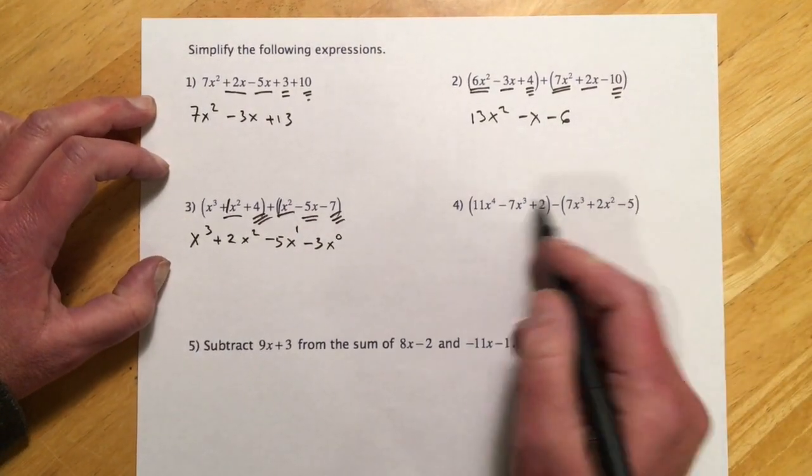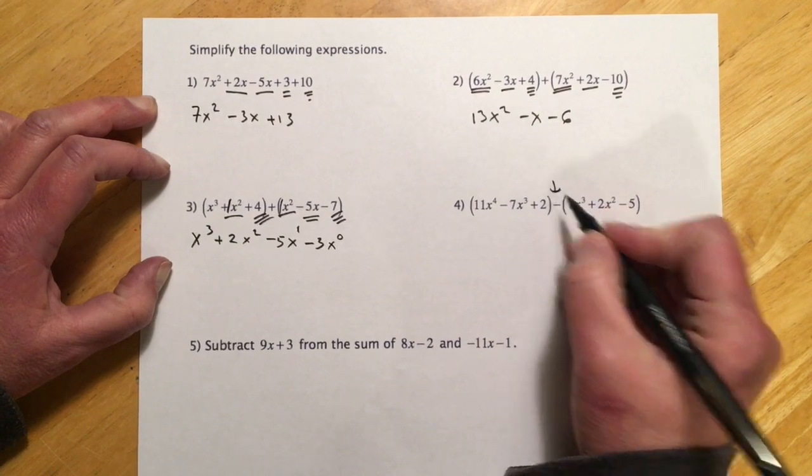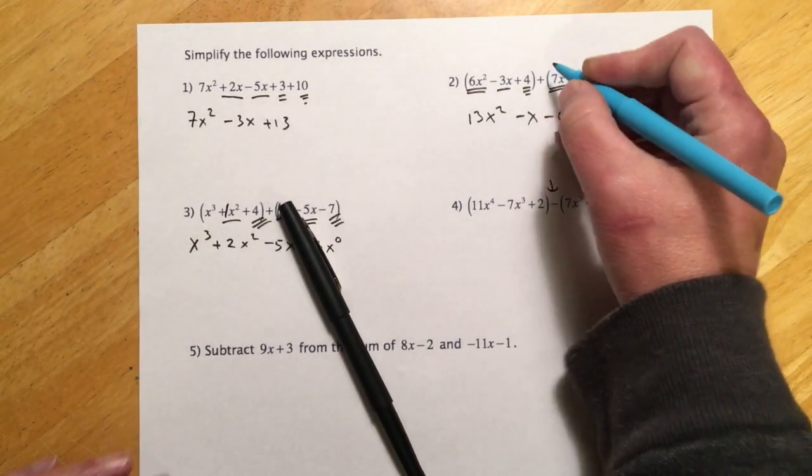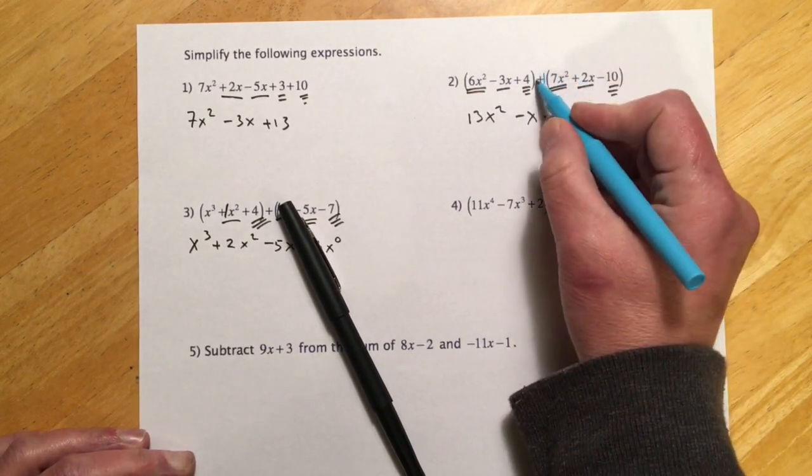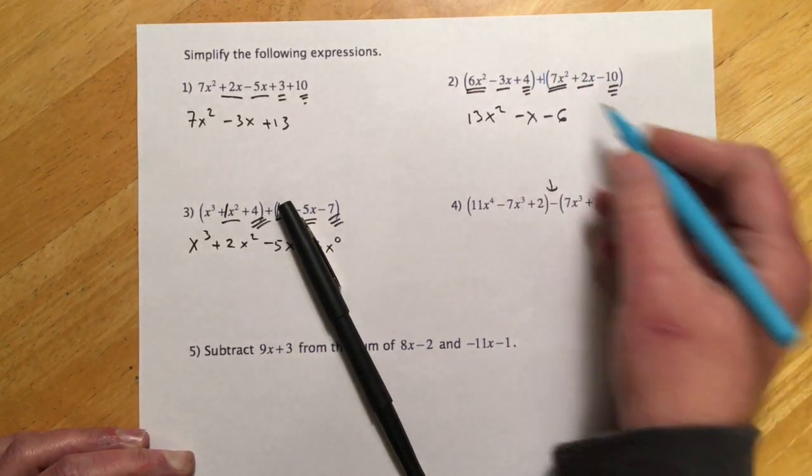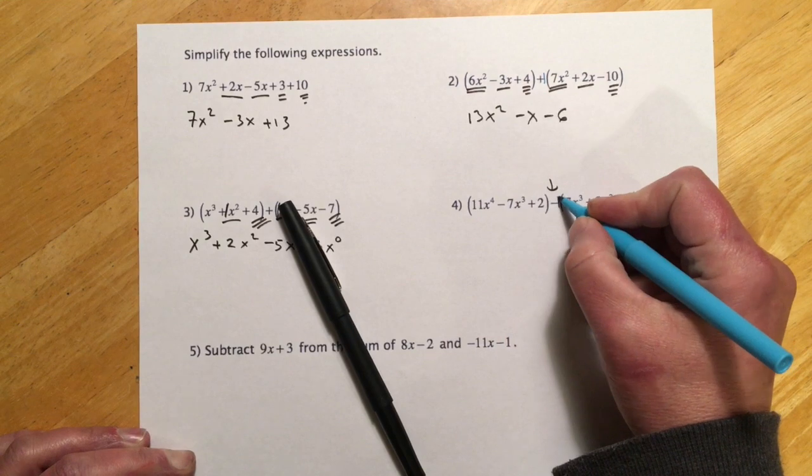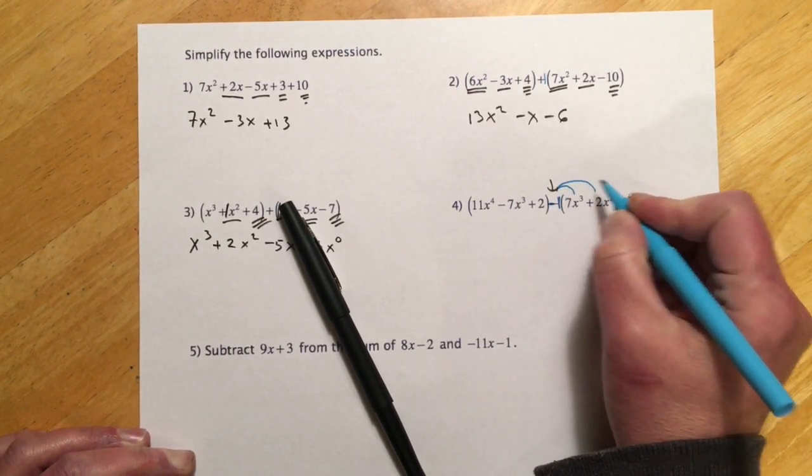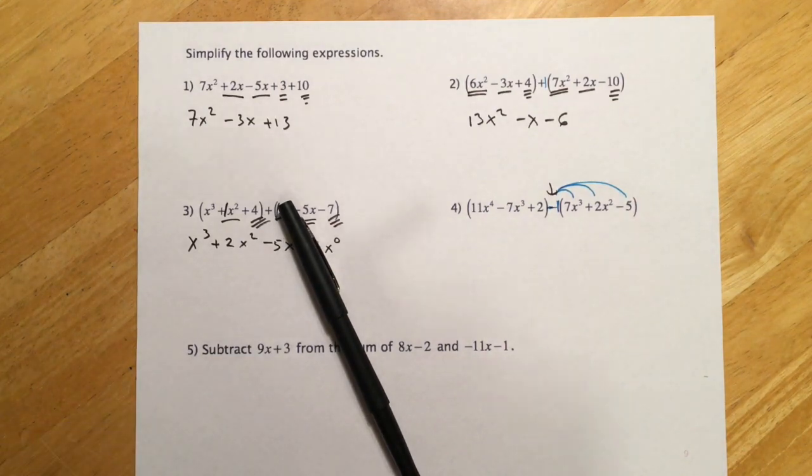Example 4, now this one has these parentheses, but this time because of that minus, that kind of changes things. When it's a plus, it's like a plus 1. And if I go 1 times all this stuff, I just get the stuff, so that doesn't matter. But here, this is like a minus 1, so now I have to distribute that sign across the second set of parentheses.